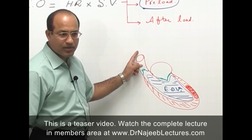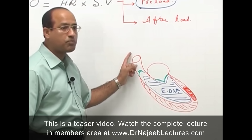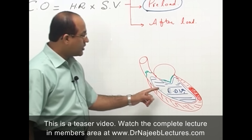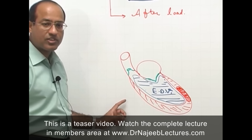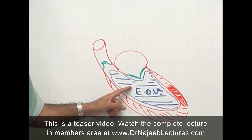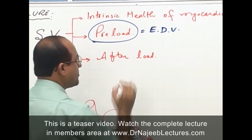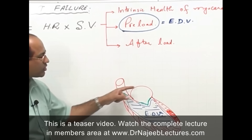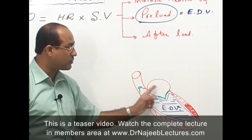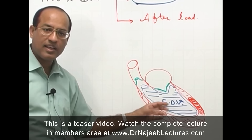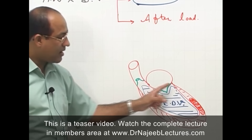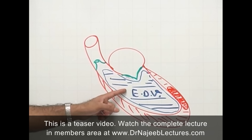Ejection fraction is the percentage of the end-diastolic volume ejected per contraction of the left or right ventricle — normally about 50%. Preload equals end-diastolic volume. All factors that increase end-diastolic volume increase preload. For example, increasing venous return increases preload, as does increasing diastolic filling time. So the ventricle must be intrinsically healthy and able to work on the end-diastolic volume.